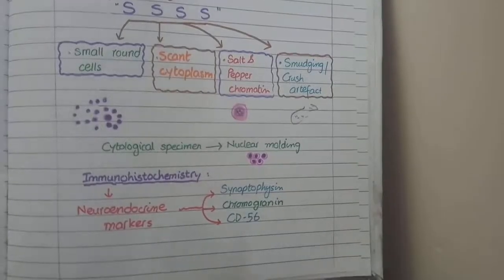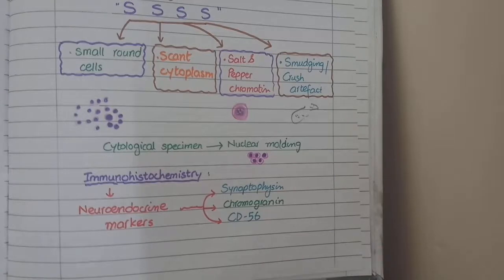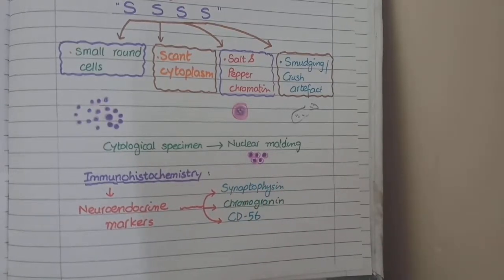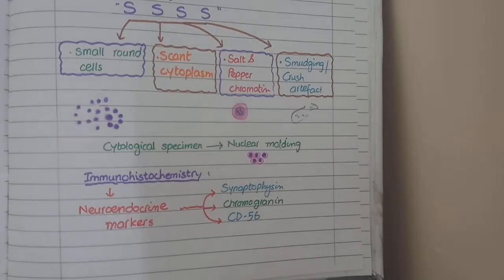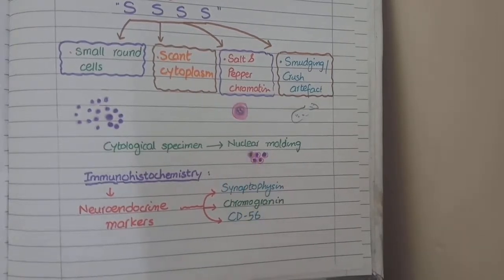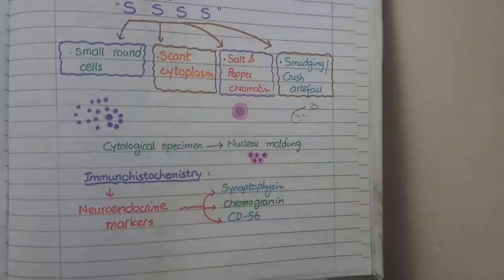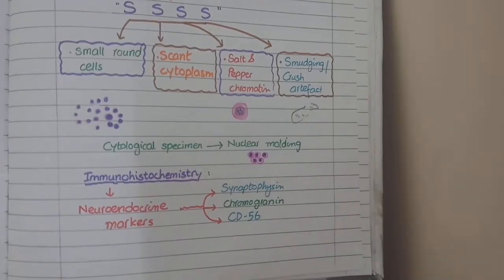On cytological specimen, you will also appreciate the feature of nuclear molding, which means the nuclei of cells look as if they are present very close to one another. This happens because the quantity of cytoplasm is very less, so the nuclei being the only visible part appear to mold closely together. Overall, the microscopic picture of small cell carcinoma shows small round cells, scant cytoplasm, salt and pepper chromatin, smudging or crushed artifact, and on cytological specimens, nuclear molding.